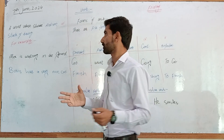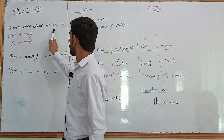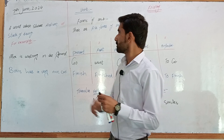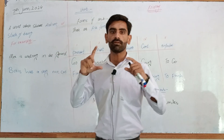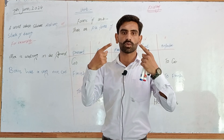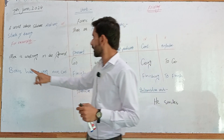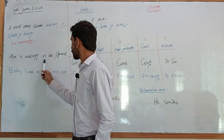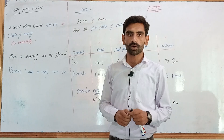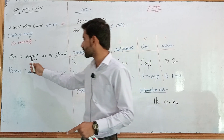So first of all, what is verb? Basically, a verb is a word which shows an action or state of being. So what does it mean by action? Action means that in which there is the involvement of your body, the involvement of your movement, any movement of your body. For example, Alex is walking in the ground. It is an action verb. How is it an action verb? Because there is the movement of my legs. So that's why it's an action verb.